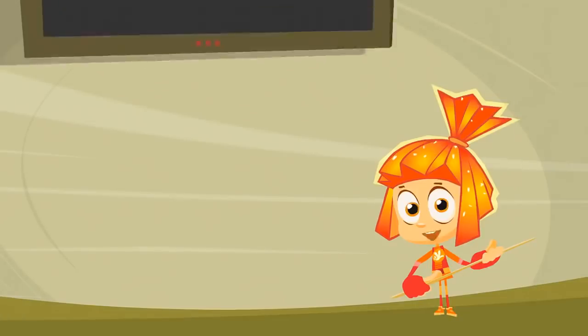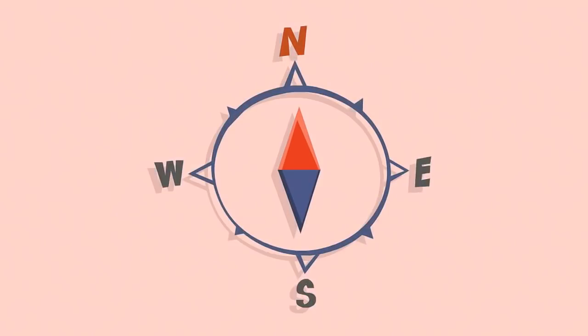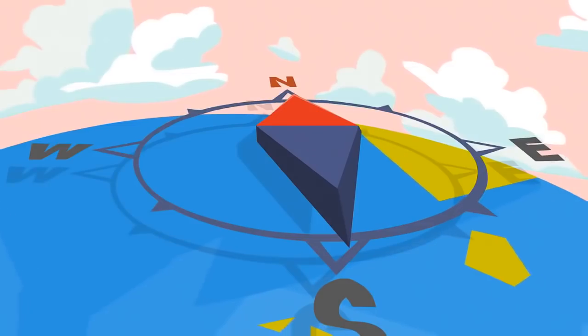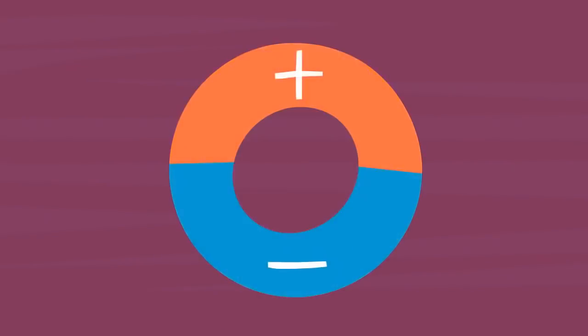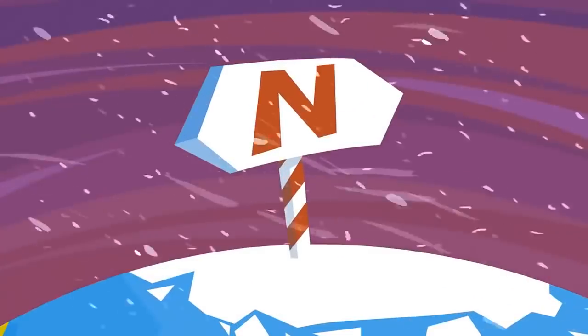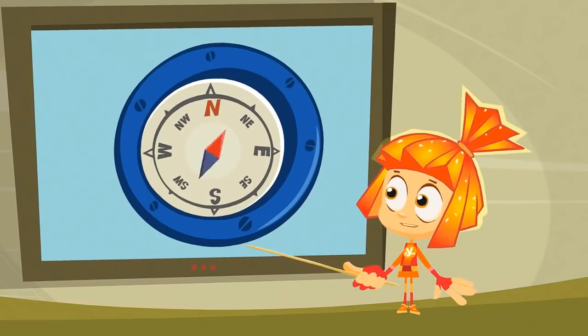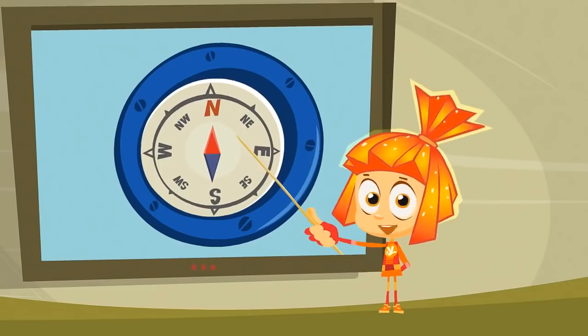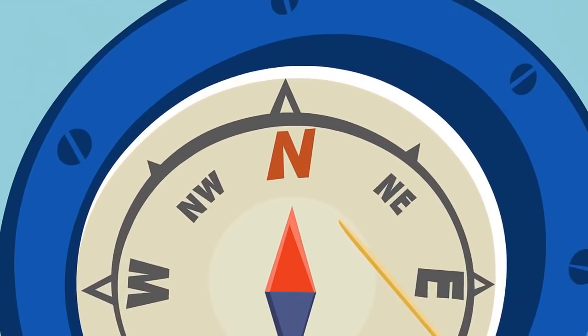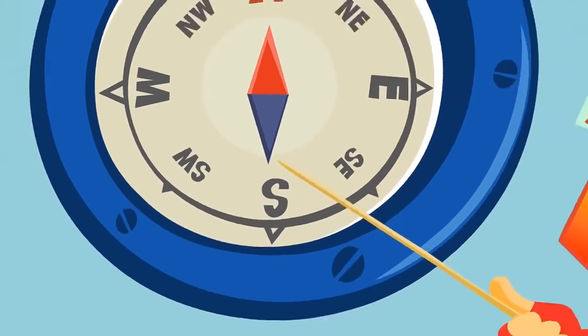A compass is a special tool that helps sailors and pilots know in which direction they're traveling, whether in the air or on the sea. Our planet is like a big magnet that has two poles – the north pole and the south pole. These magnetic poles help the needle in the compass find its way. The needle is magnetized, so one of its ends will be attracted to the north magnetic pole and point at it, while the other end will always point towards the south.